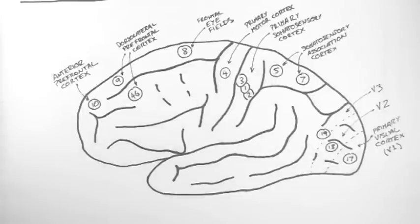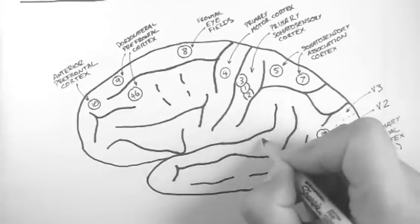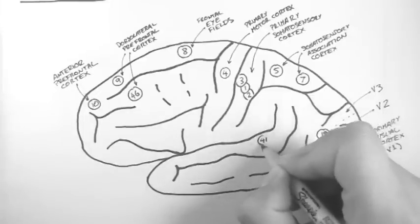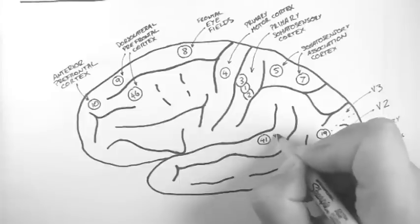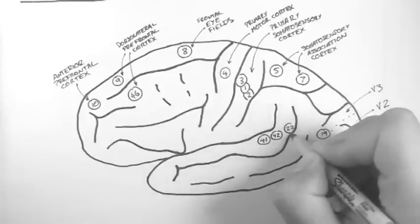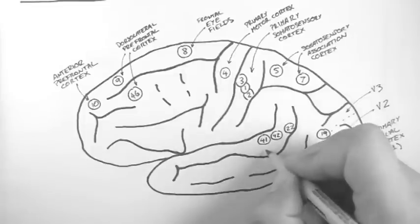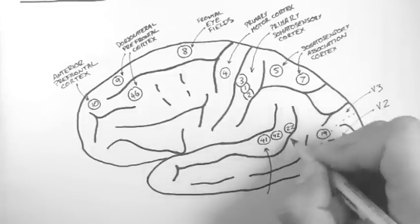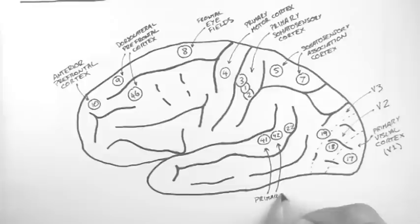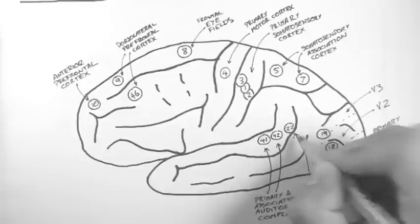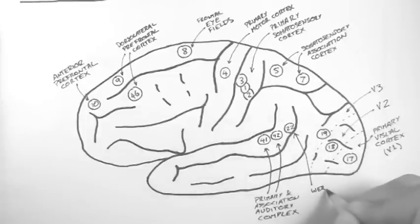Over here, 41 and 42 and 22 lie in the temporal lobe, in the superior temporal gyrus. 41 and 42 are the primary and association auditory complex. And Wernicke's area, which is Brodman number 22, is a very important part of the brain for understanding language.